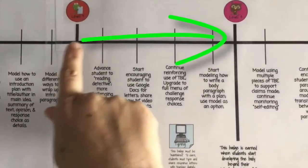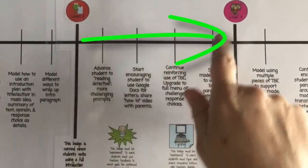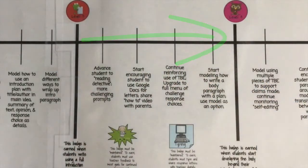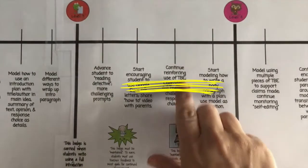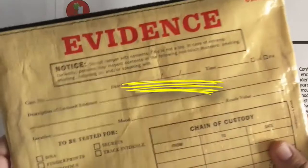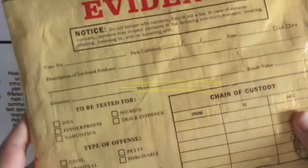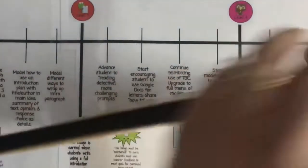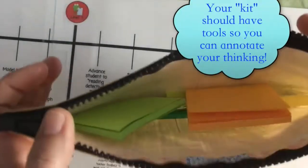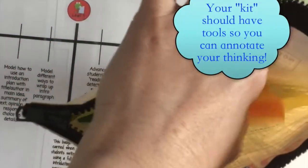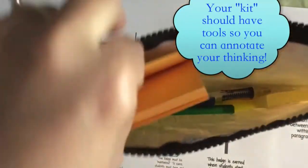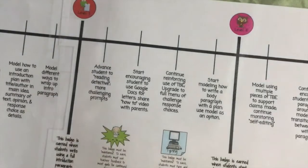We're continuing to work on leveling up, and I want to reinforce your use of text-based evidence. Make sure you have your collection kit handy when you read. It's pretty simple — just have post-it notes and tools to annotate with handy.